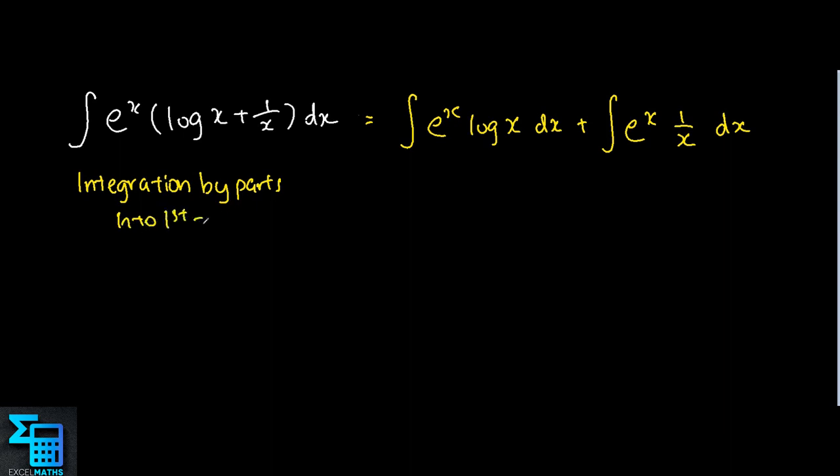We know that the formula for integration by parts is the integral of u dv equals uv minus integral of v du, where dv is the differential form of v, and du is the differential form of u.